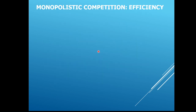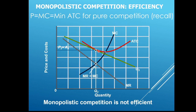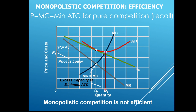The monopolistic competitor is productively inefficient — P is greater than minimum ATC — and allocatively inefficient — P is greater than marginal cost. Interestingly, the monopolistic competitor has the ability to produce more at a lower cost per unit; this is called excess capacity. They could produce at a lower cost per unit but would not maximize profit, so they leave part of their capacity unused. Excess capacity is the gap between the output where ATC equals MC and the output where ATC equals price.